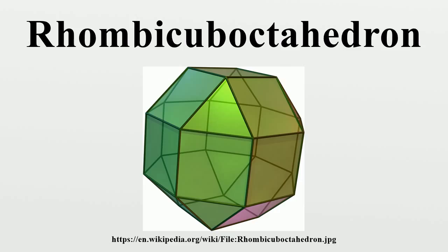The rhombic arboctahedron is used in three uniform space-filling tessellations: the cantillated cubic honeycomb, the ronsite-truncated cubic honeycomb, and the ronsinated-alternated cubic honeycomb.